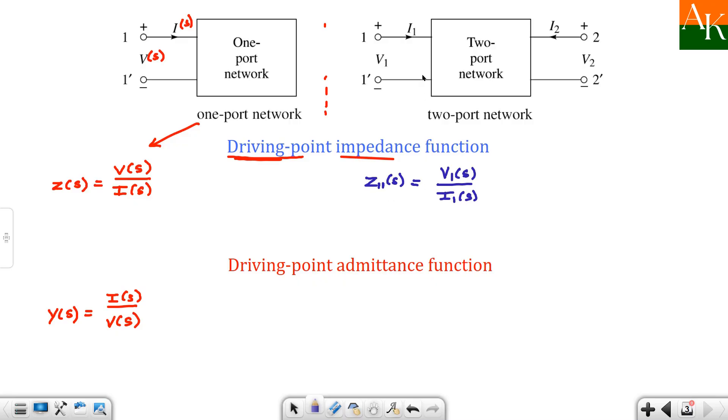So z one one of s we have defined - this is an impedance function. Similarly you can also define z two two of s, and you can have the ratio of v2 of s by i2 of s. These two quantities - where are they defined? Numerator and denominator, they are defined at the same port.